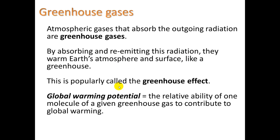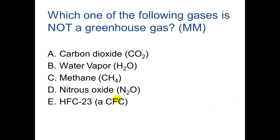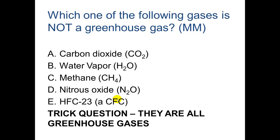So greenhouse gases, we're going to kind of jump over that. You can pause and read it yourself. By global warming potential, this means the relative ability of one molecule of a given greenhouse gas to contribute to global warming. Which one of the following is not a greenhouse gas? Multiple mark. Ha, I play a trick on you. They're all greenhouse gases, even water vapor.